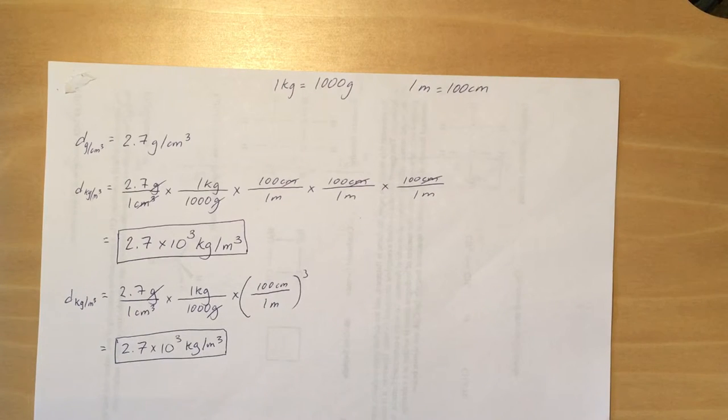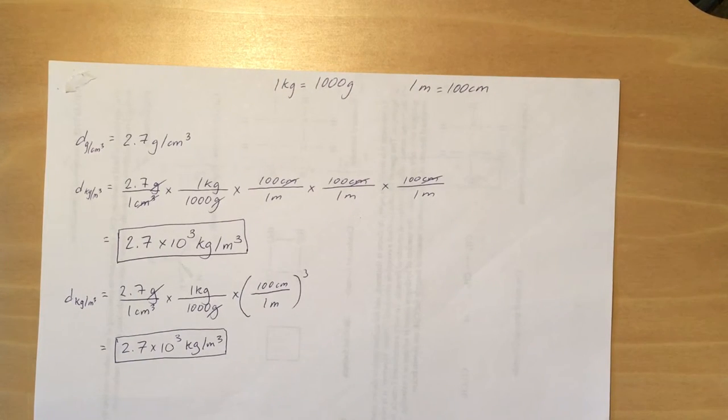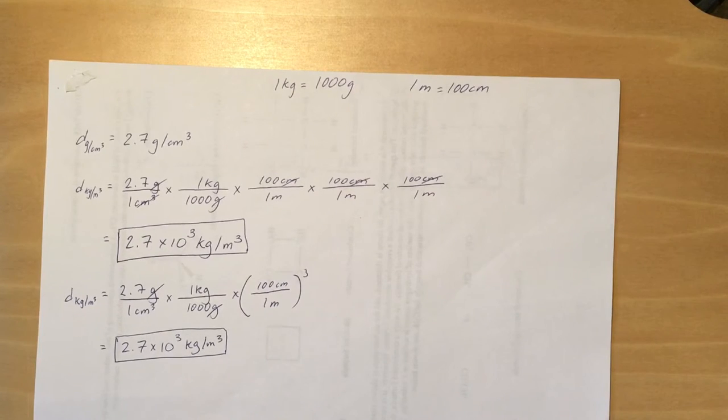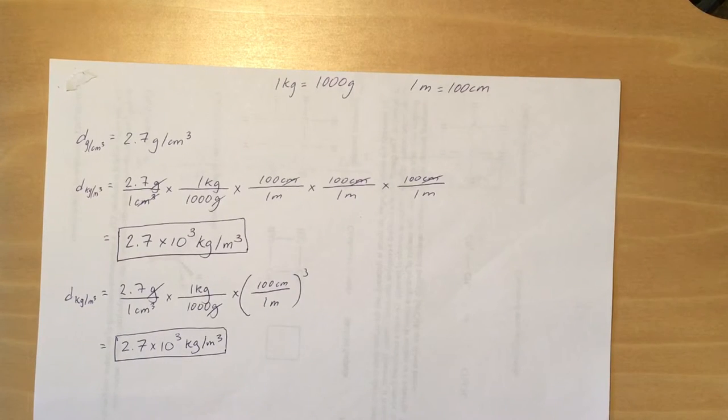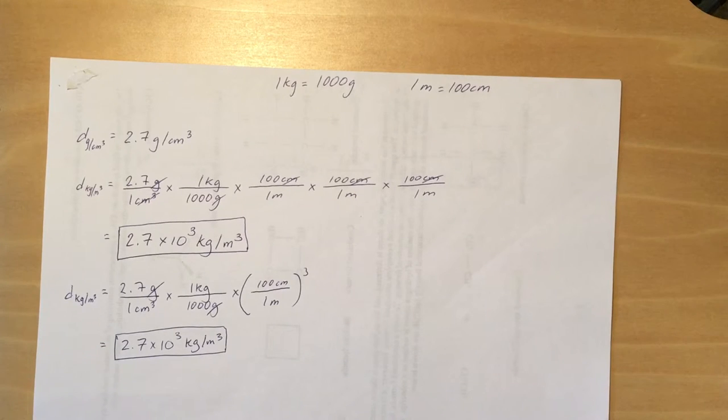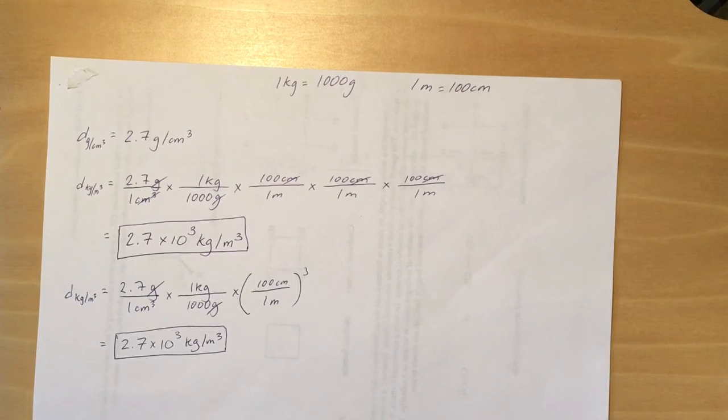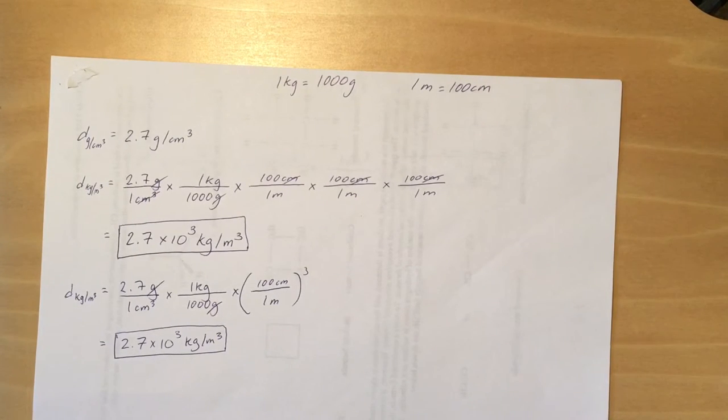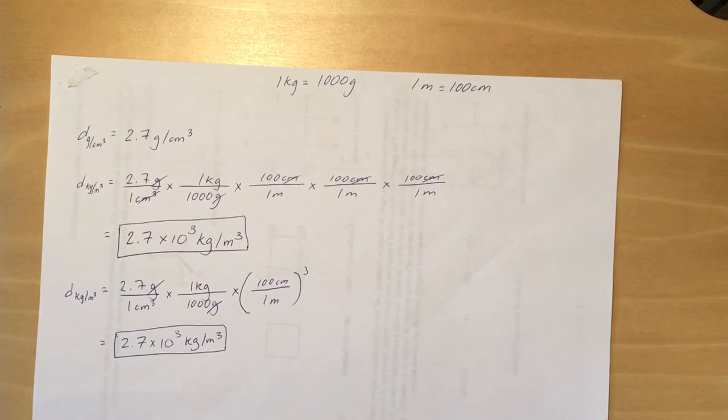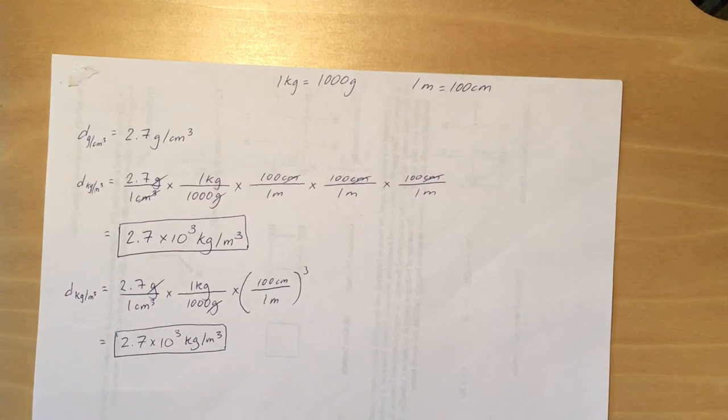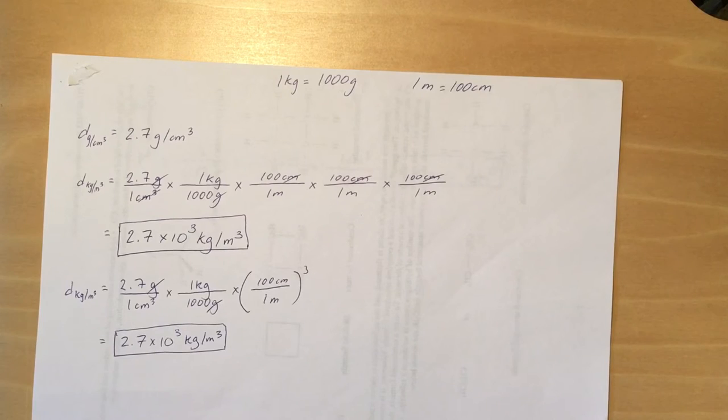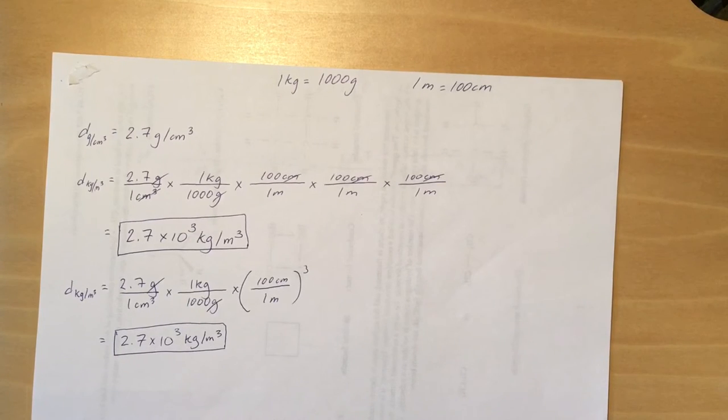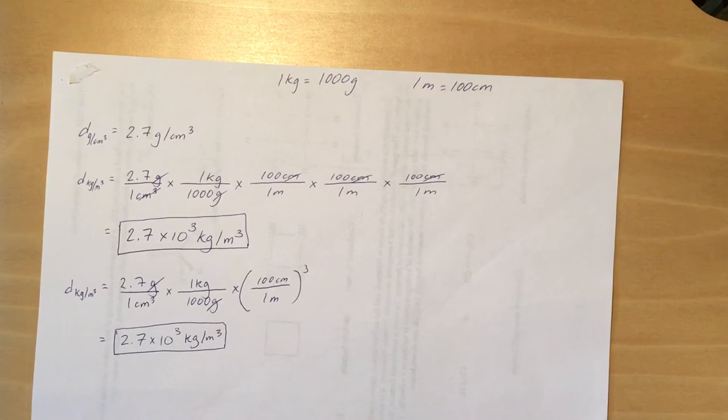So I like to show you for the first time to just do it three times like that, so you can see that you're actually using that conversion factor three times. You're canceling out centimeters, centimeters, and centimeters again. Then if you multiply meters times meters times meters in the bottom, you get meters squared. That will give you your units of kilograms per meter squared.